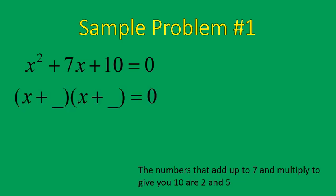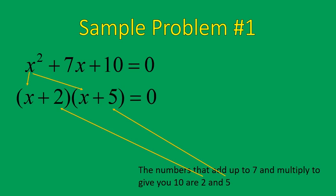When you're factoring a quadratic, it gets set up like this. The x squared, the first term, gets divided into the first location inside each set of parentheses. The 2 and the 5 go into those blank spots. So it ends up looking like x plus 2 times x plus 5. You have now factored that quadratic equation. If you use FOIL or the distributive property to check, multiplying x plus 2 times x plus 5 will give you back x squared plus 7x plus 10.